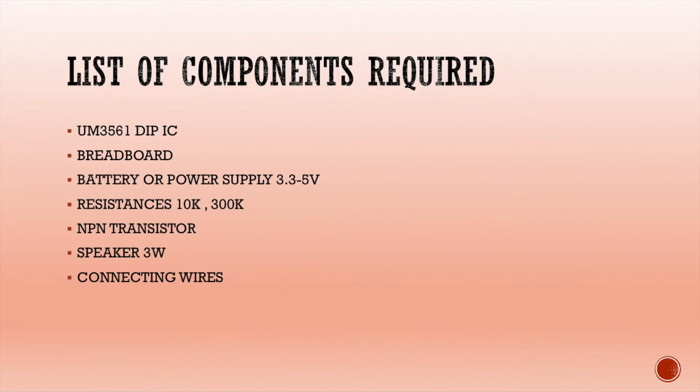We also need a battery or power supply ranging from 3.3 volts to 5 volts. 5 volts is the maximum voltage that can be applied to the UM3561, so you can use it as long as your system is okay.